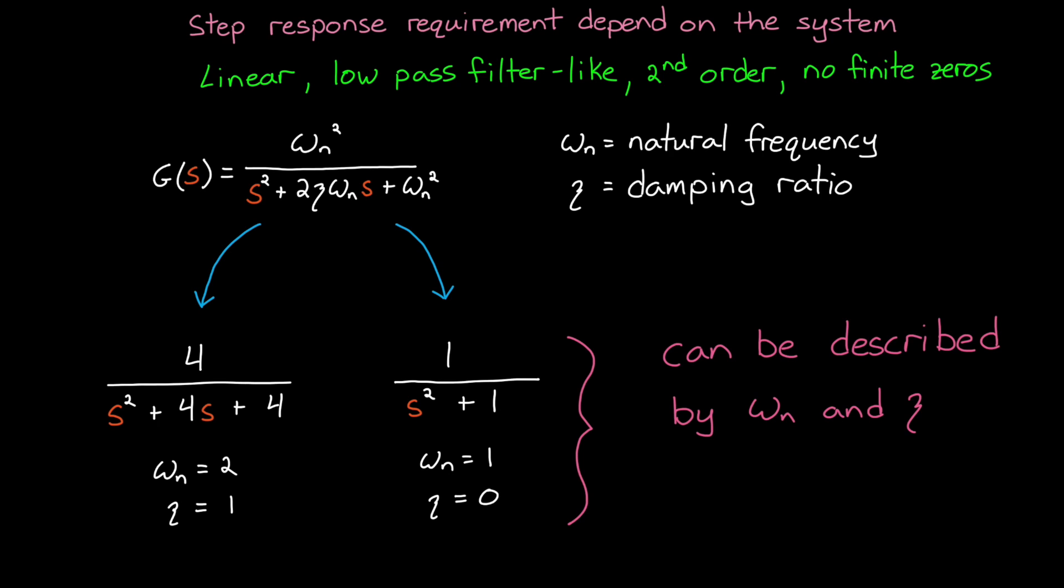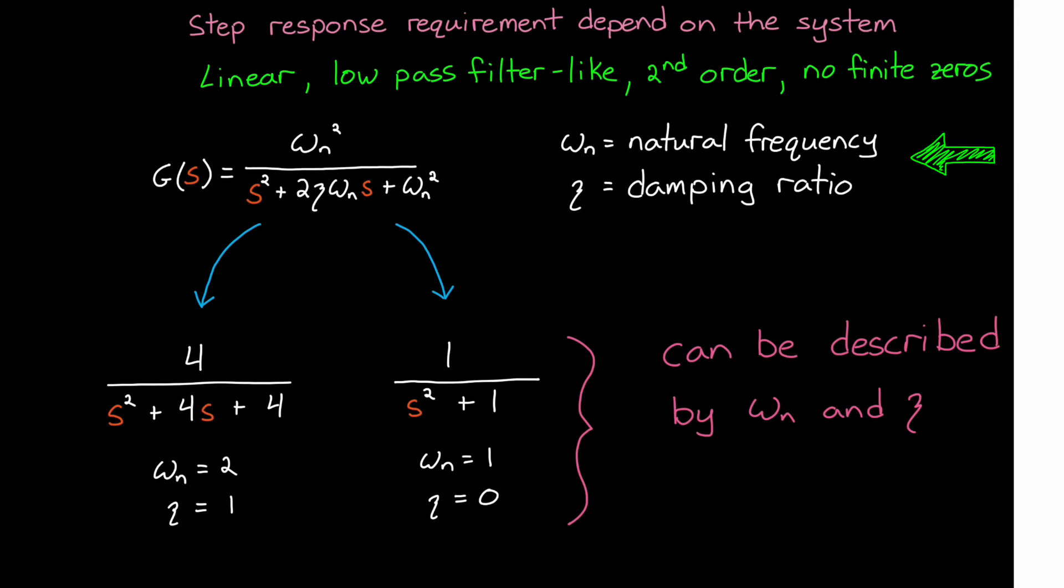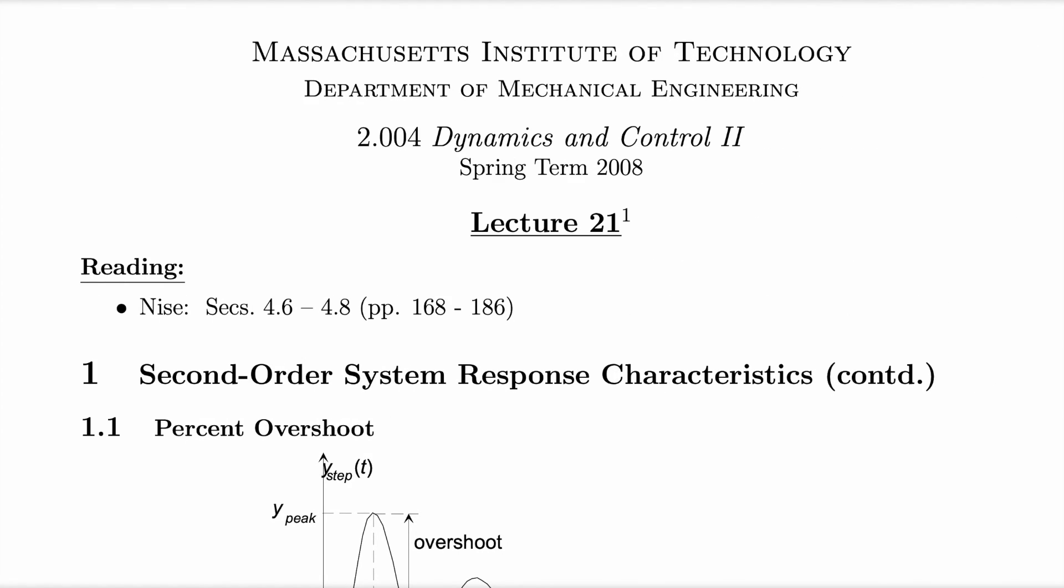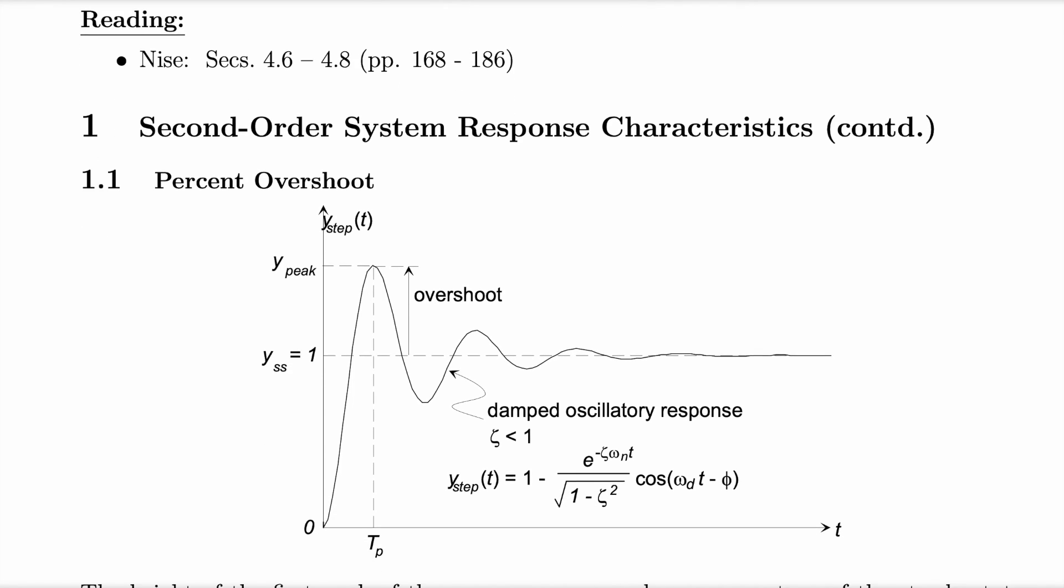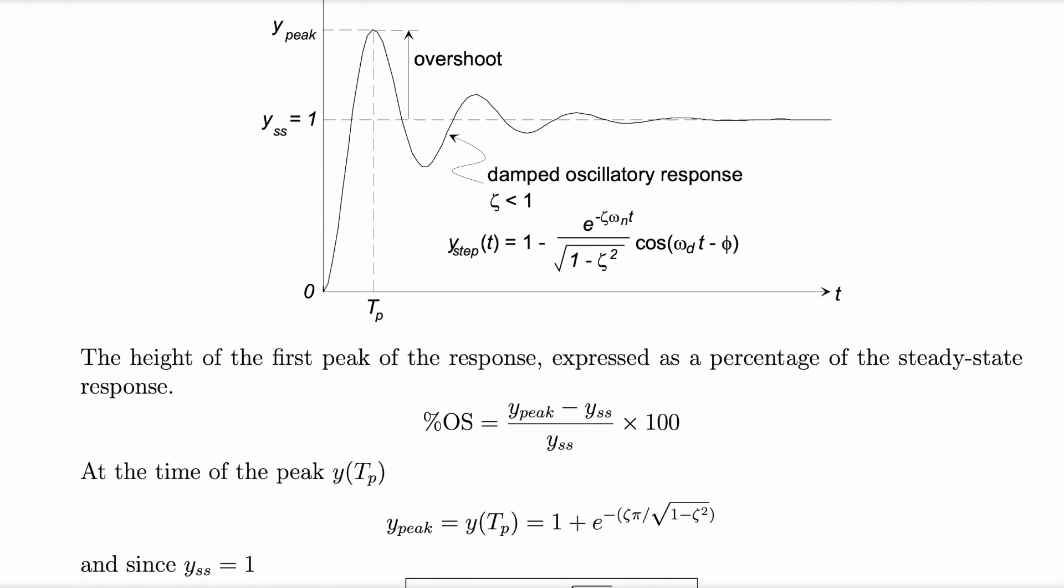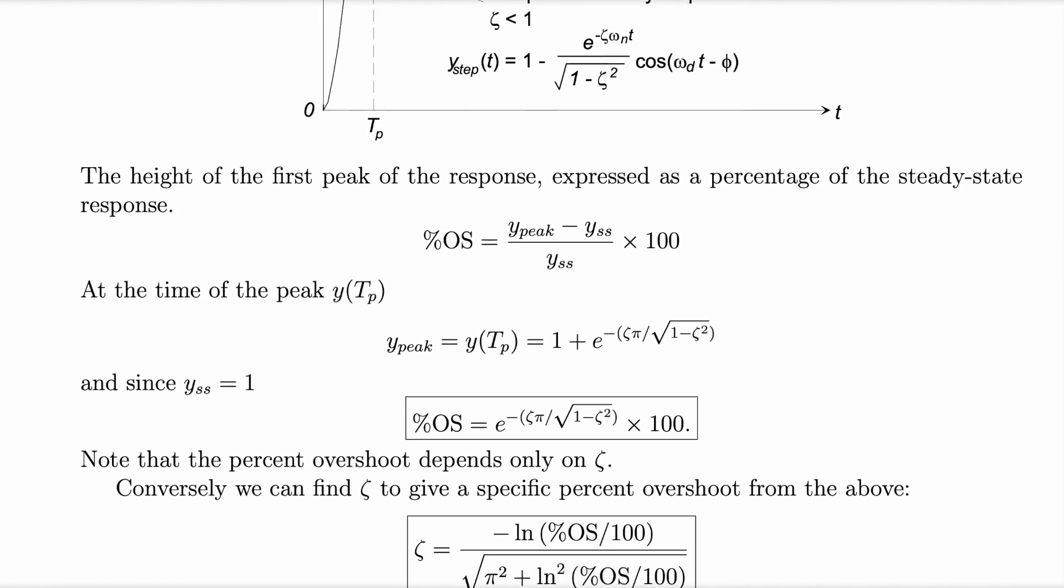If your closed loop system can be described by this transfer function, then instead of having to specify a bunch of requirements like rise time, settling time, overshoot, and so on, you only need to specify natural frequency and damping ratio. These parameters are related to those other time domain requirements through some equations. And there's tons of great resources that explain these equations, and I'm going to link to some of them below if you're interested in learning more.